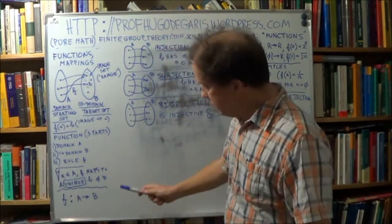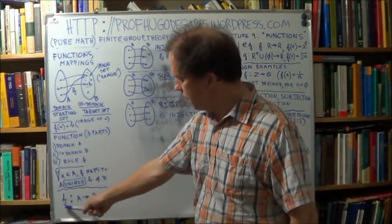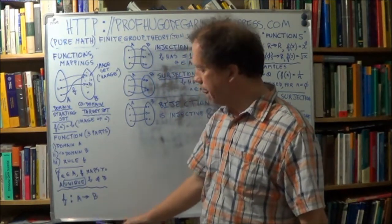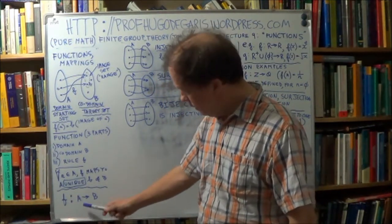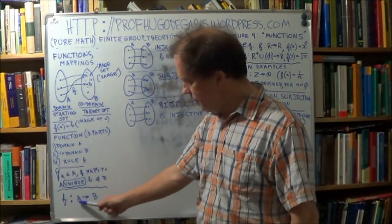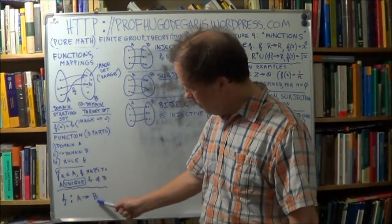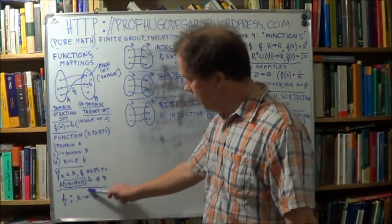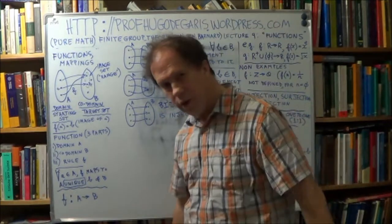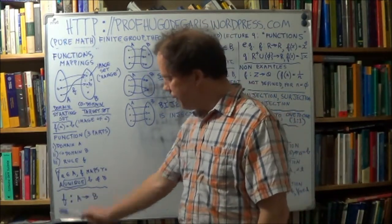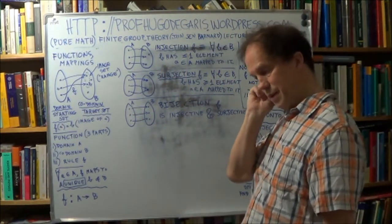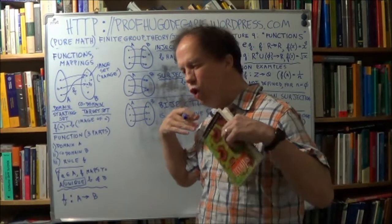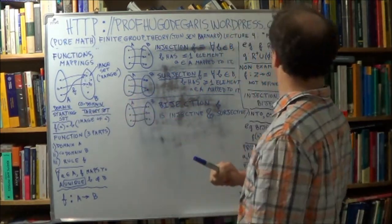And this mapping is generally represented like this. So here's your function, your F, your mapper, your assigner, colon, and then you have your two sets. So you say that this function maps this set, your starting set, your domain, into this set, your target set, or your co-domain. Now, you will see this in high-level mathematics everywhere. It's very common. And so in a sense, this particular lecture is basic. Like, it's more than just important. It just gets used all the time, this concept of mapping. So very important.